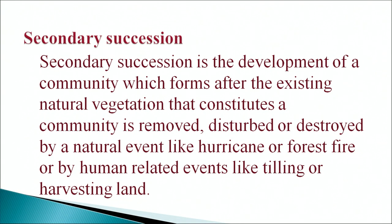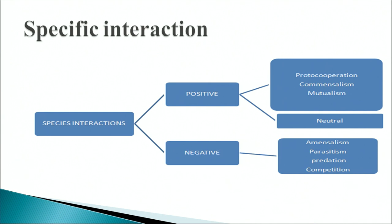Secondary succession is the development of a community after existing natural vegetation is removed, disturbed or destroyed by natural events like hurricanes or forest fires, or by human-related events like tilling or harvesting land. Species interactions may be positive — including proto-cooperation, commensalism and mutualism — or neutral, or negative — including amensalism, parasitism, predation and competition.